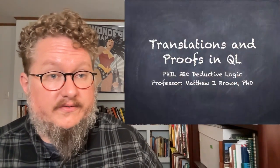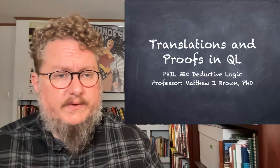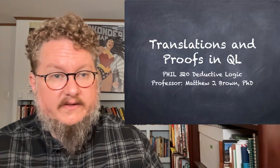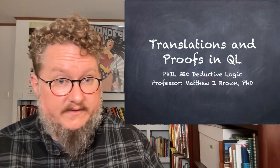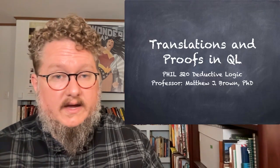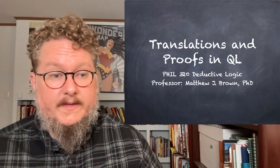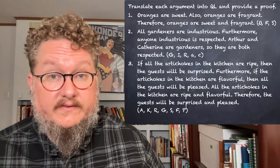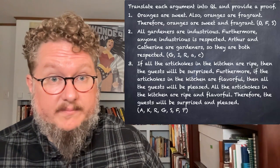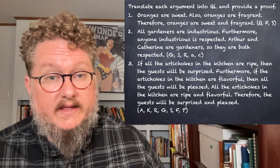Hello and welcome back to Phil 320 Deductive Logic. I'm Professor Matthew Brown and this is the second in our series of lectures for Unit 7, where we're going to talk about translations and proofs in QL. What we're doing here is combining the skills we learned back in Unit 5, Chapter 4 of the book, where we did translations to QL with our proof strategies. Let's get straight into it with some examples — take each of these three English language arguments, translate it into QL, and provide a proof.